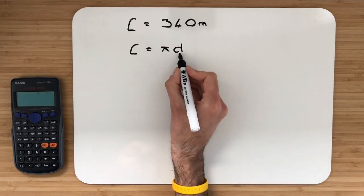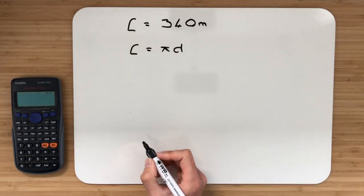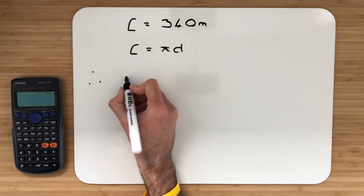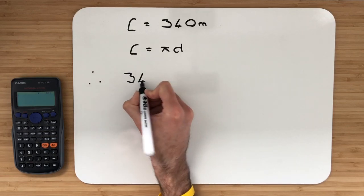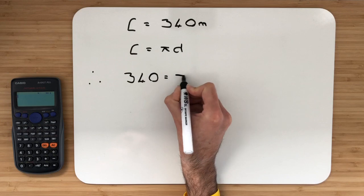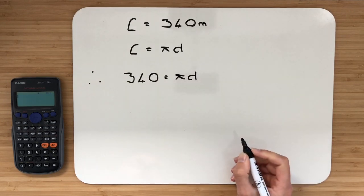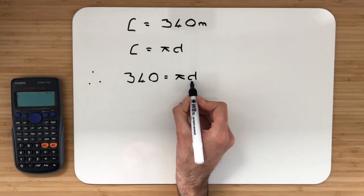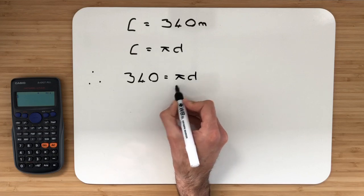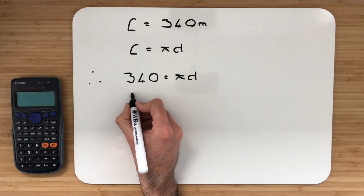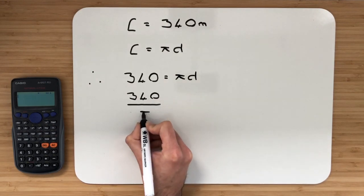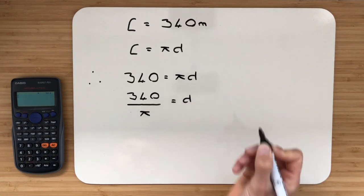Now we're looking to find the diameter and we've been given the circumference of 340 metres. Therefore, in place of the circumference, we know that is 340. So that is now equal to π multiplied by the diameter. Now I want to solve for the diameter. That's currently being multiplied by π. So we can take the π over and divide, opposite side opposite operation. So 340 divided by π is equal to the diameter.